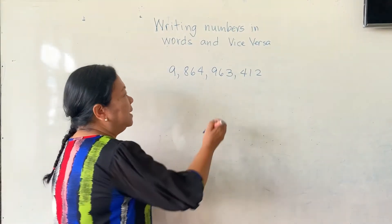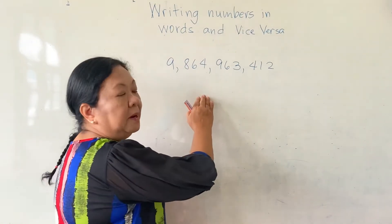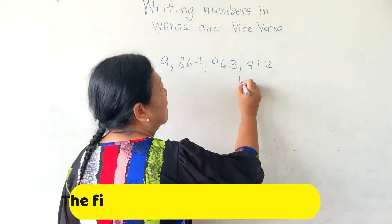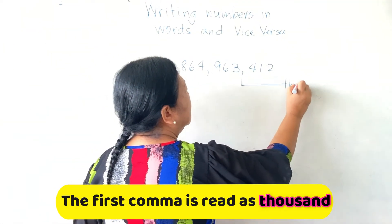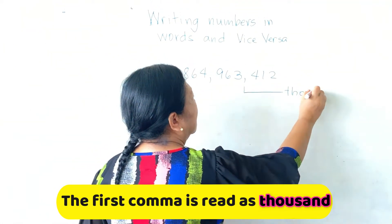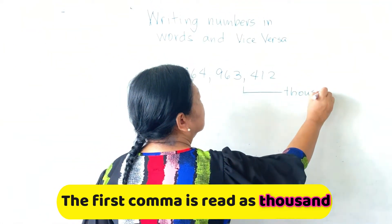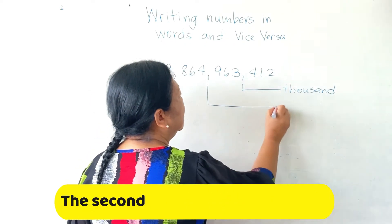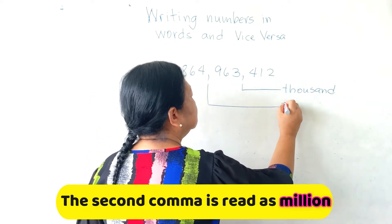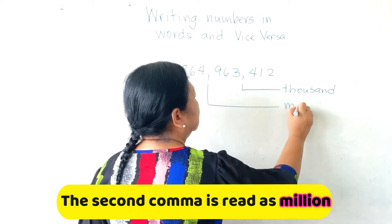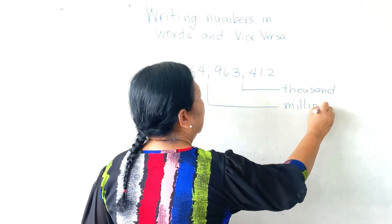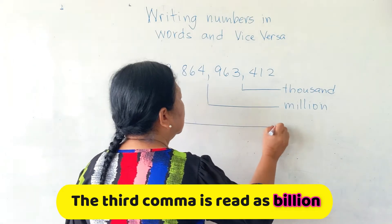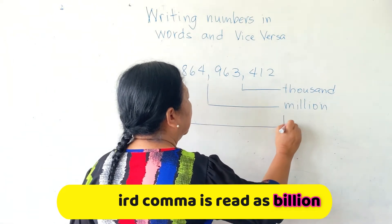For you to easily remember how to read the number: the first comma, we read it as thousand. The second comma, we read it as million. And the third comma, we read it as billion.